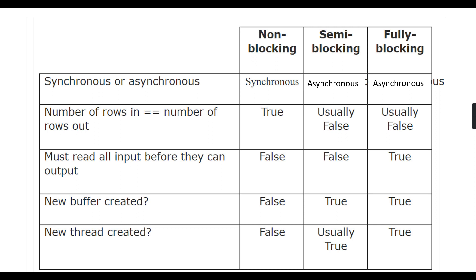To summarize: all non-blocking transformations are synchronous, and when it is semi-blocking or fully blocking, it is asynchronous. For Copy Column, the input buffer and output buffer remain the same — that is non-blocking. Some transformations cannot use the input buffer because the output records change, the number of rows changes, or columns may increase. These are considered asynchronous.